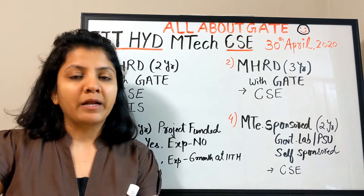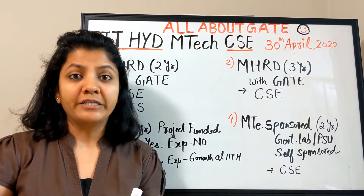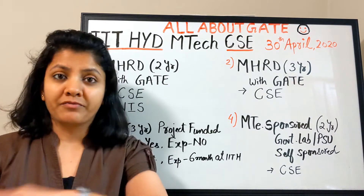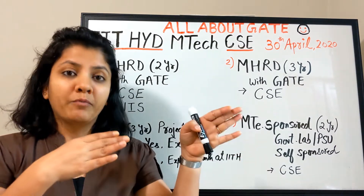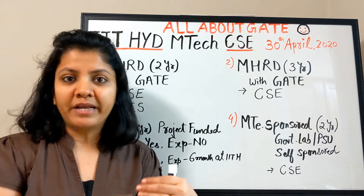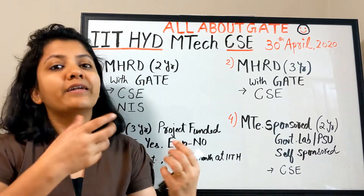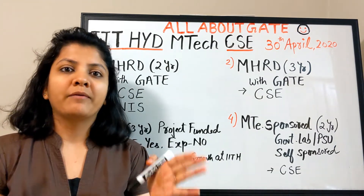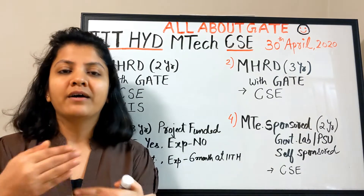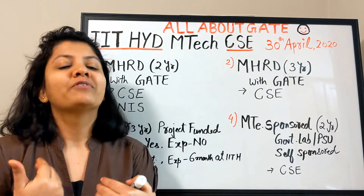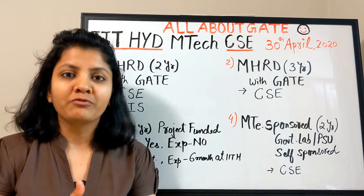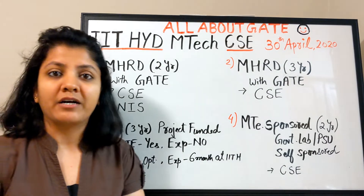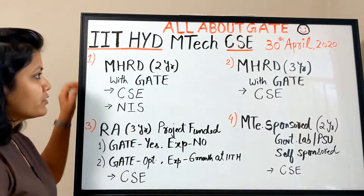The names are different depending on where you look. In the admission portal when you're ready to apply, the categories are shown differently than on the CSE department homepage under MTech admissions. I've tried to find a common understanding between the two and sort out the confusion for you.